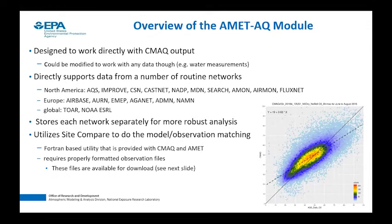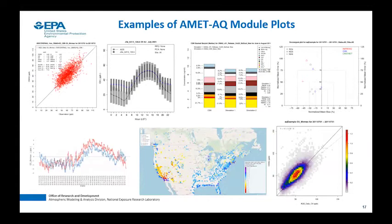On the air quality side, I utilize the SiteCompare code, which is distributed with both AMET and CMAQ. This is the Fortran-based utility that pairs model and observations. It requires properly formatted observation files. Here are some examples of the plots available on the AQ side: standard scatter plots, box plots, more unique plots like the stacked bar plot for PM, soccer goal plots, et cetera. I'll cover a few of the newer ones going forward.